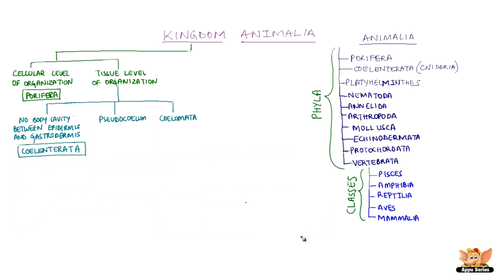Organisms of Coelenterata have coelenteron or gastrovascular cavity. Though the body has a single opening, there is no body cavity between the epidermis, the cells on the outside of the body, and gastrodermis, the inner lining of the body. Corals, Hydra, and Jellyfish are examples of Coelenterata.